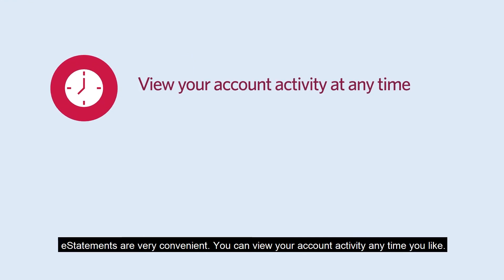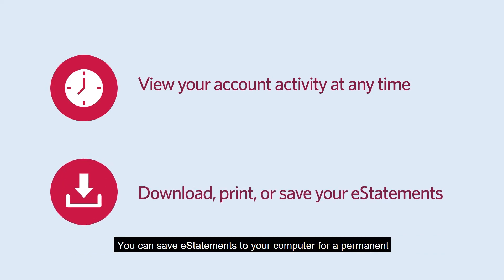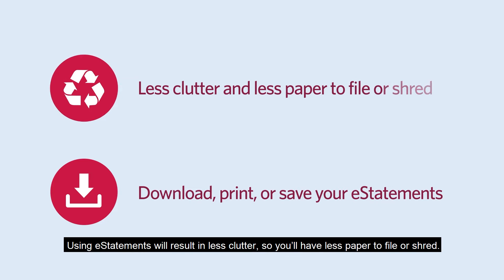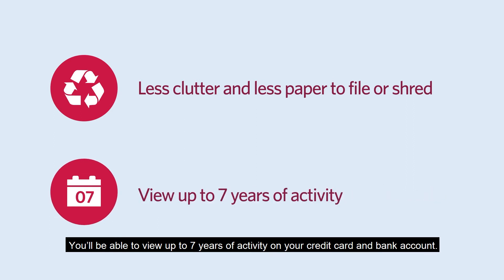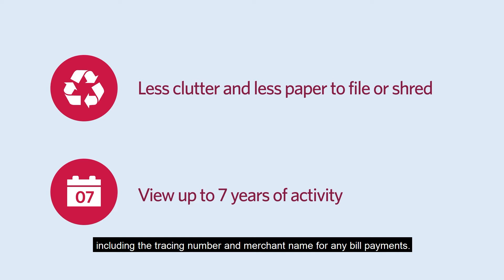eStatements are very convenient. You can view your account activity anytime you like. You can save eStatements to your computer for a permanent and easily accessible record and print what you need when you need it. Using eStatements will result in less clutter, so you'll have less paper to file or shred. You'll be able to view up to seven years of activity on your credit card and bank account. With eStatements, you'll have more detailed transaction information, including the tracing number and merchant name for any bill payments.